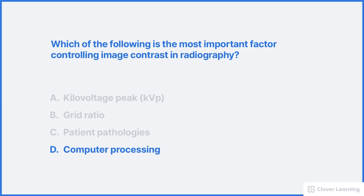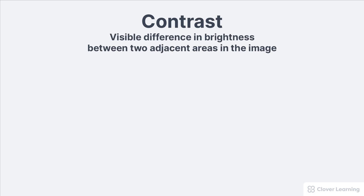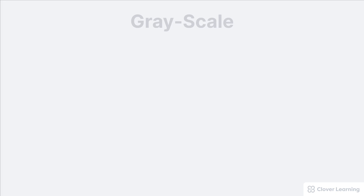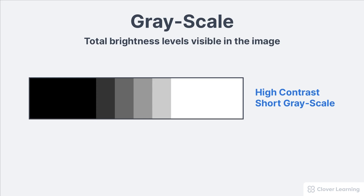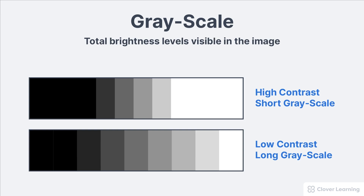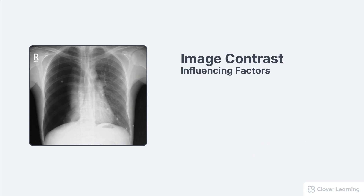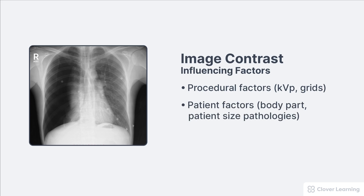In summary, contrast in a radiographic image refers to the visible difference in brightness between two adjacent areas in the image. Grayscale describes the total brightness levels visible in the image. A high contrast image has a short gray scale; a low contrast image has a long gray scale. Image contrast is critically important — it is how our eyes see different structures. It is influenced by procedural factors like KVP and grids, patient factors like size and pathology, but the most important factor is computer processing.